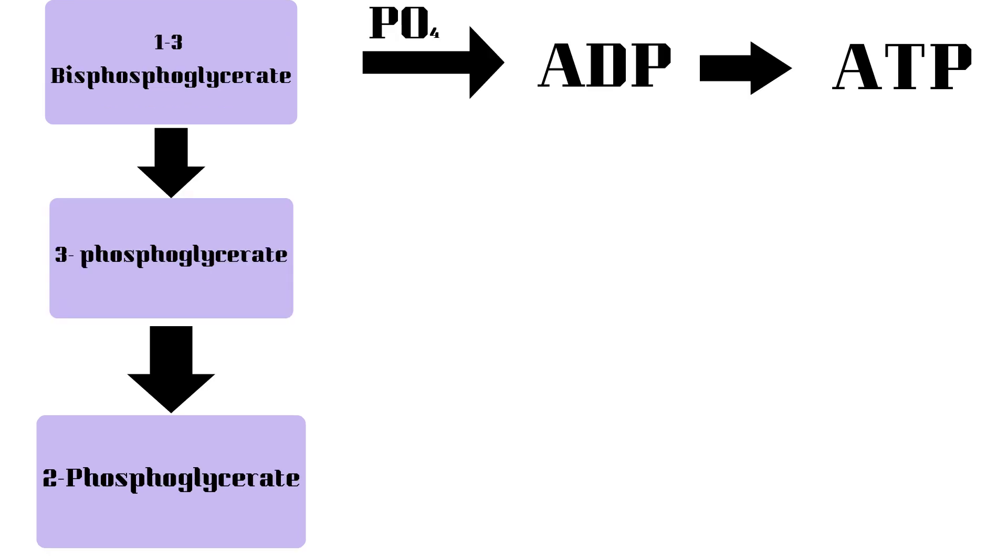The 3-phosphoglycerate is then rearranged to form its isomer 2-phosphoglycerate using the enzyme phosphoglycerate mutase.